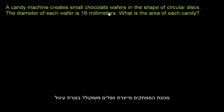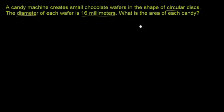A candy machine creates small chocolate wafers in the shape of circular disks. The diameter of each wafer is 16 millimeters. What is the area of each candy?